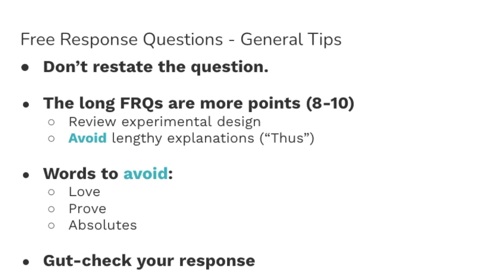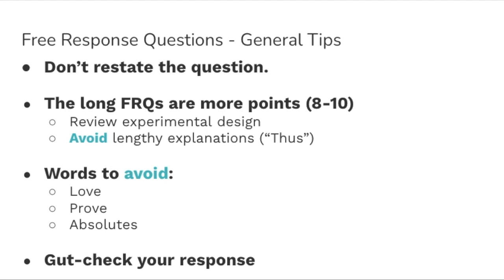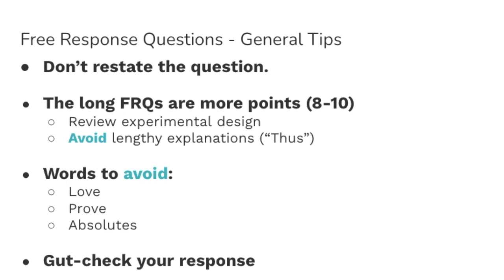All right, so let's get specifically into the long FRQs here. These are worth more points, anywhere from 8 to 10 depending on the question. In order to prepare for these, you should definitely review experimental design. How do you design an experiment? What are variables? What are controls? What are ways to predict outcomes of an experiment? Practice making predictions or giving biological explanations of certain things. You always want to avoid certain words like love, prove, or any absolutes.